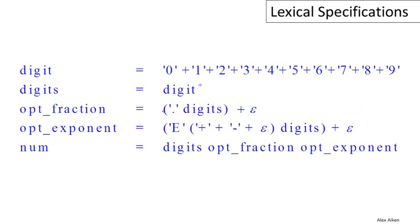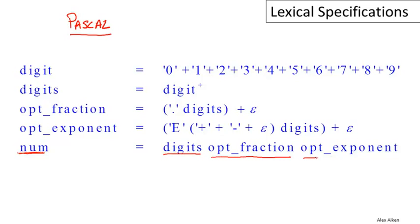Finally, for our last example, let's look at a fragment of the lexical specification of a real programming language — in this case, Pascal, which is in the Algol family of languages. Pascal is an early example of a typed language in the same general family as Fortran and C. This particular fragment deals with the definition of numbers. A number consists of three things: some digits, an optional fraction, and an optional exponent. So we're dealing with floating point numbers — a bunch of digits, optionally followed by a fraction, optionally followed by an exponent. Either the fraction or the exponent can be present independent of the other.